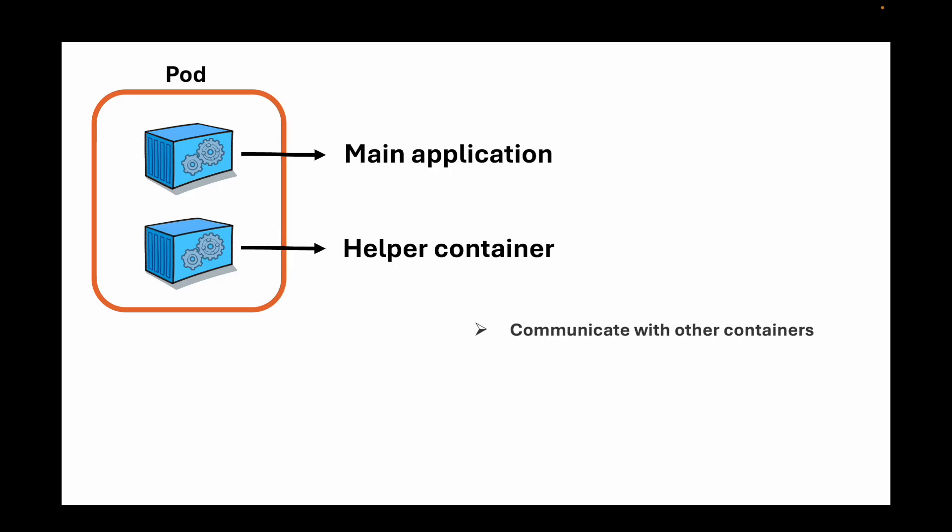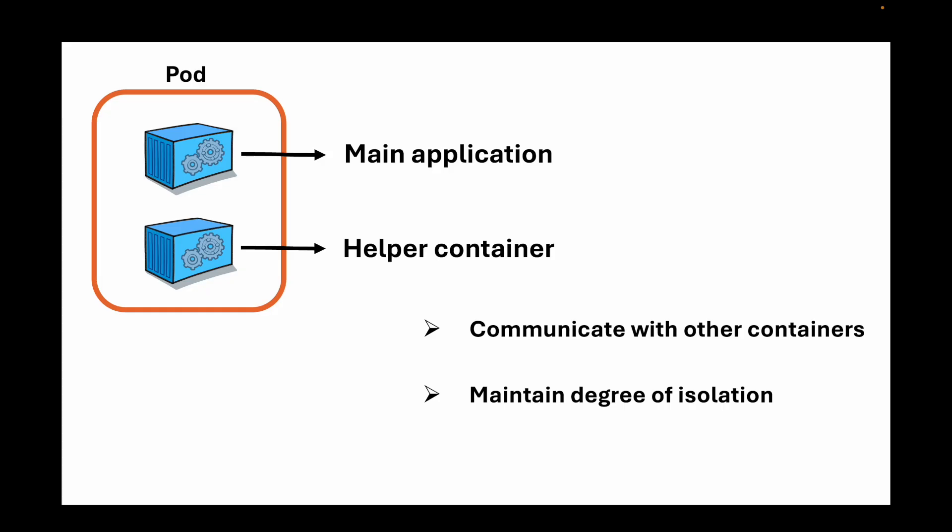Containers can easily communicate with other containers in the same pod — it is as though they are on the same machine, but they still maintain a degree of isolation from each other. In situations where we want to run multi-container pods, it is generally because that requirement is needed, and it is something Kubernetes can handle, but there are a few things you will need to keep in mind.